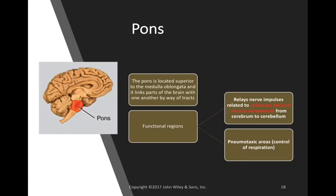The pons is the second part of the brainstem, sitting just above the medulla oblongata. Like the medulla, the pons carries sensory information up to the brain and motor information out from it, serving as a highway for neural signals. One important function of the pons is taking motor impulses to the cerebellum — many motor impulses originate in the cerebrum, travel down through the pons, and enter the cerebellum.